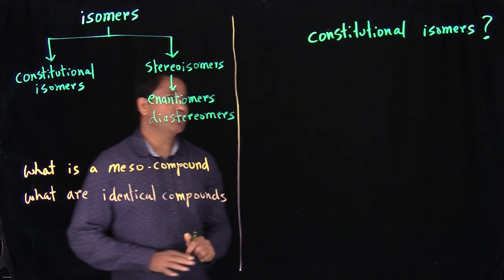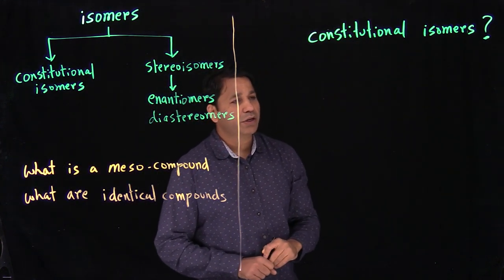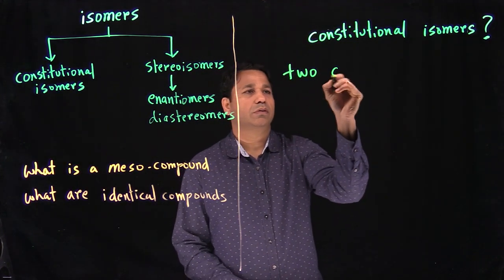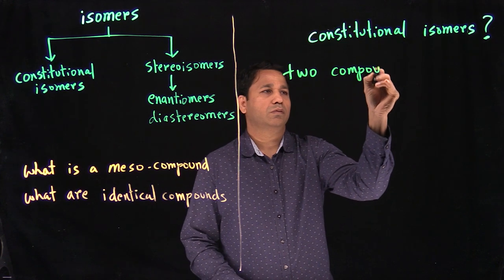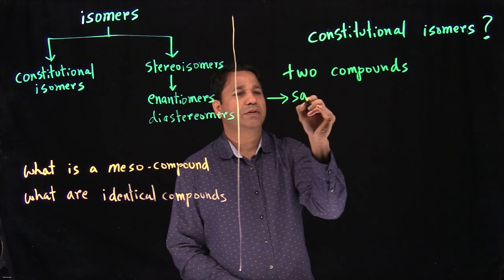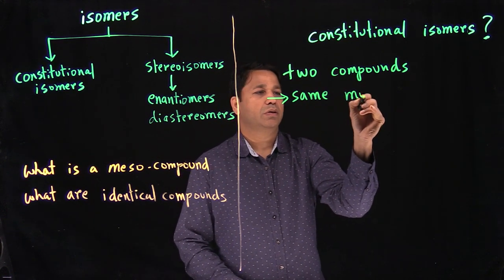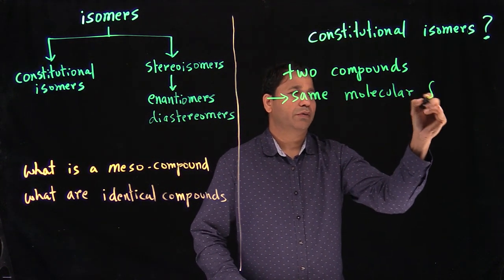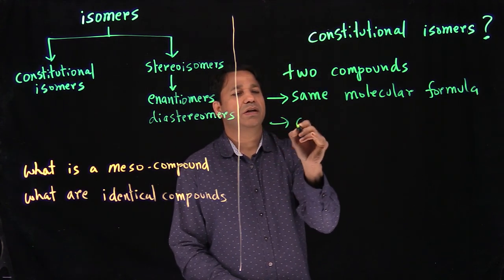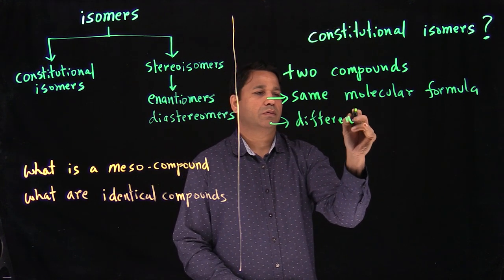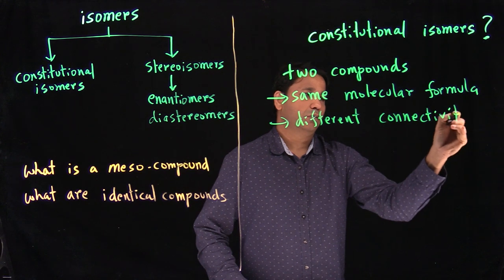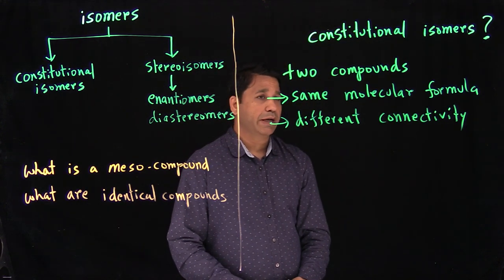First, let's look at a simple one — what are constitutional isomers? By definition, constitutional isomers are two compounds that have the same molecular formula but have different connectivity of atoms.